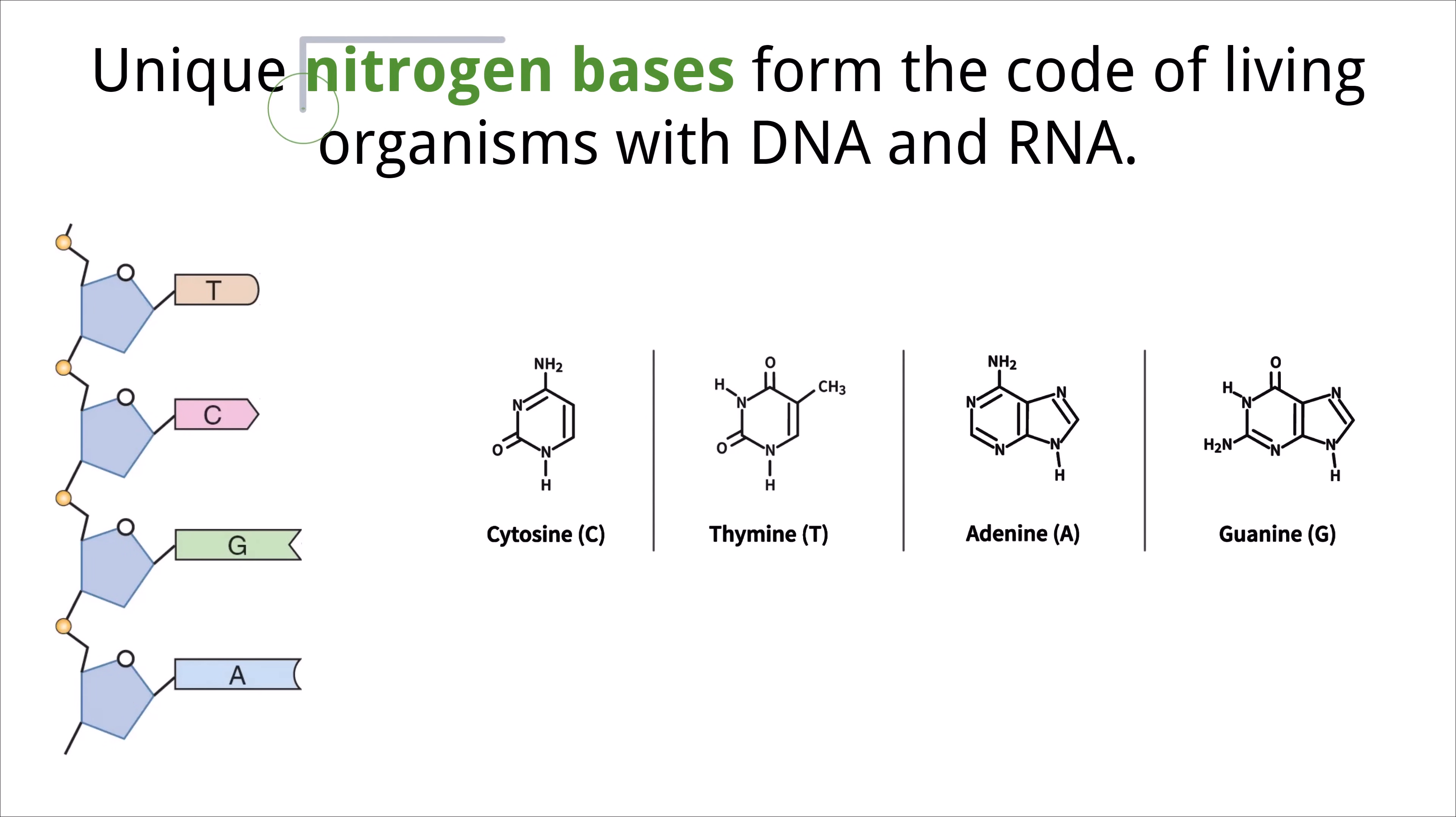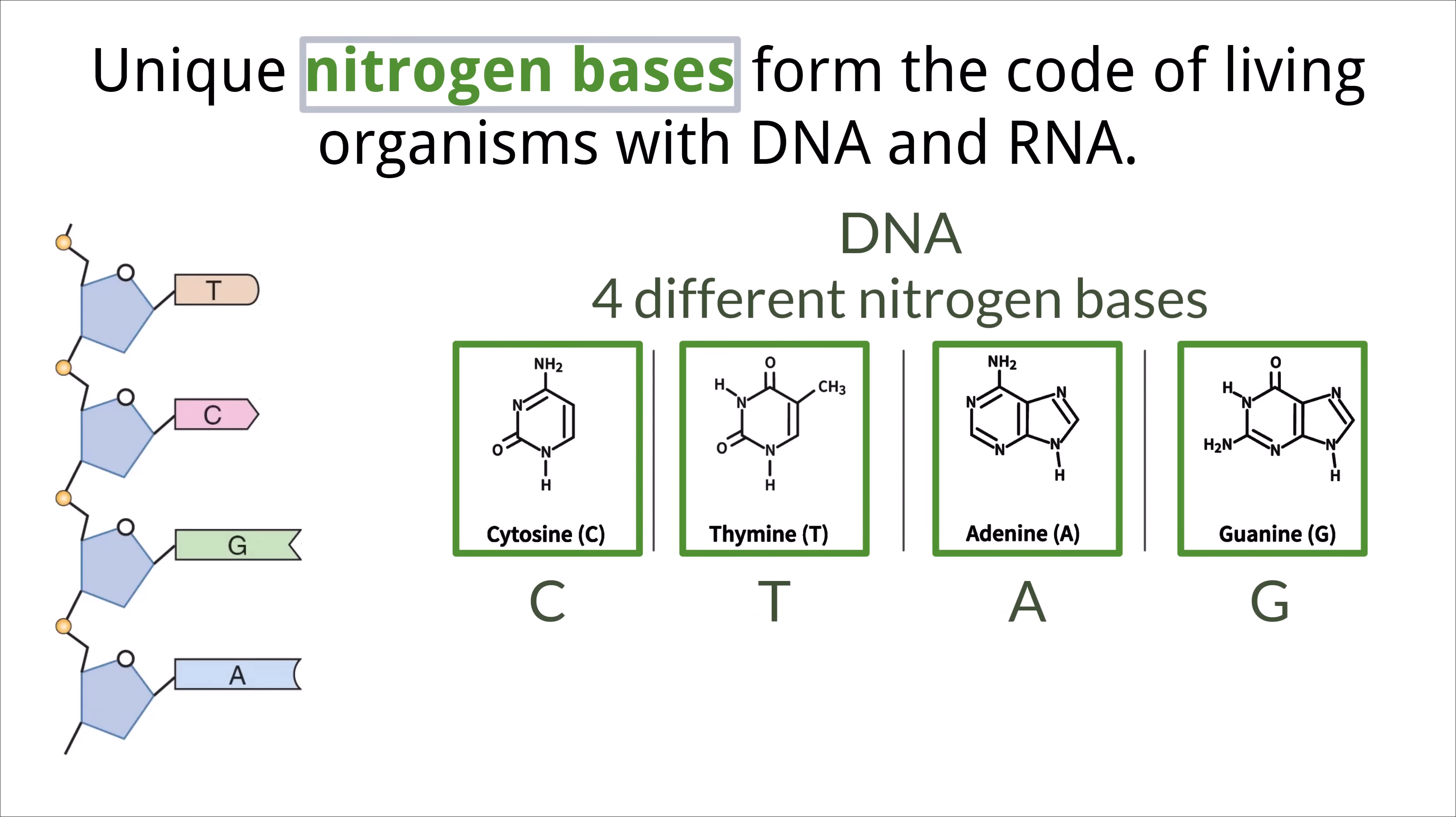Now in terms of the nitrogen base, as I said before, there are a few different variations of this molecule that can exist within a nucleotide structure. When we are talking about the structure of DNA and all that it entails, there are four different nitrogen bases that are used to build its structure. These four bases are A, adenine, T, thymine, G, guanine, and C, cytosine.